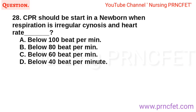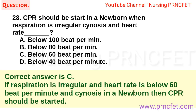Question 28: CPR should be started in a newborn when respiration is irregular, cyanosis, and heart rate is: A. Below 100 beats per minute. B. Below 80 beats per minute. C. Below 60 beats per minute. D. Below 40 beats per minute. Correct answer is C. If respiration is irregular and heart rate is below 60 beats per minute and cyanosis in a newborn, then CPR should be started.